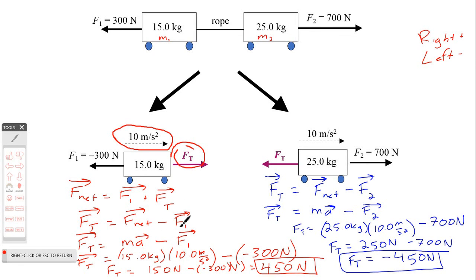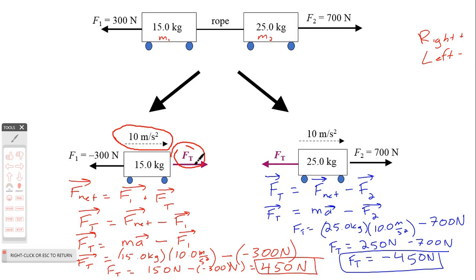Tension force equals mass times acceleration minus F1, so it's 15 kilograms times 10 meters per second squared, giving 150 newtons, minus negative 300. Minus a negative becomes plus positive, and we are left with 450 newtons of tension force. Looking back at this, if we have 450 newtons pulling this thing to the right, it will indeed move to the right — so we're in good shape.